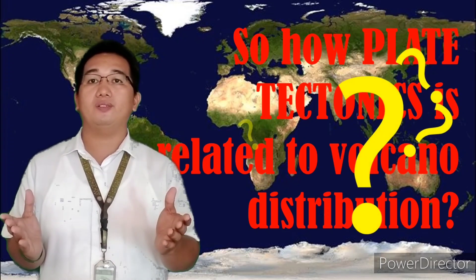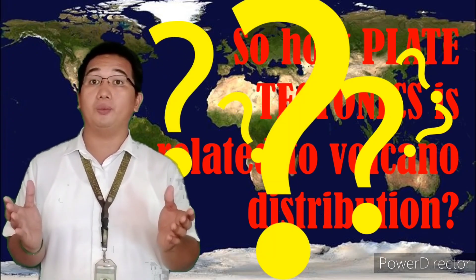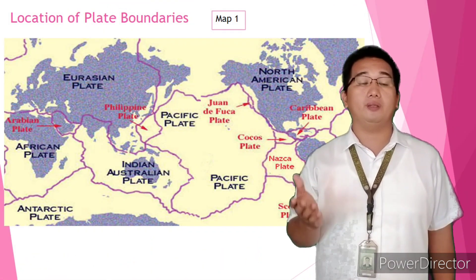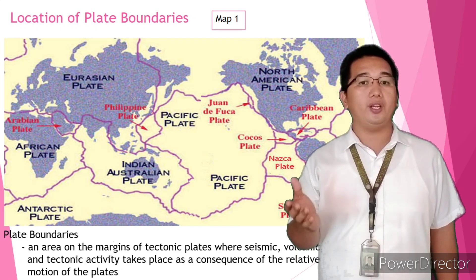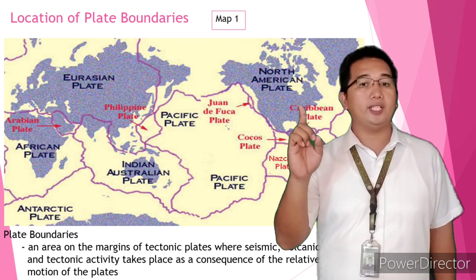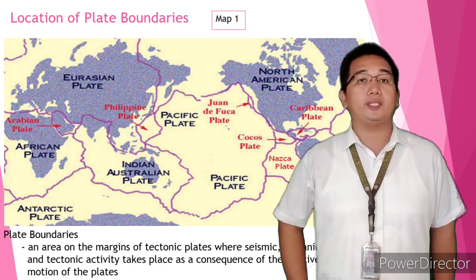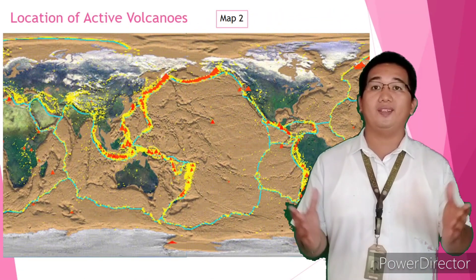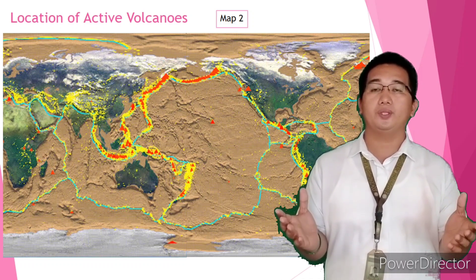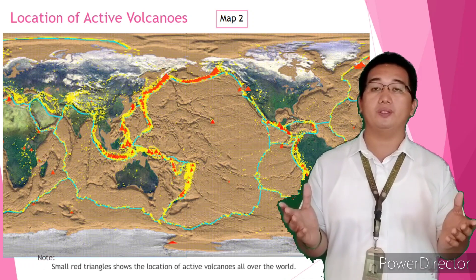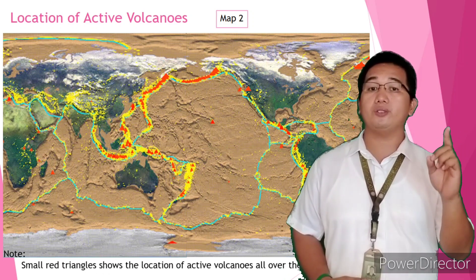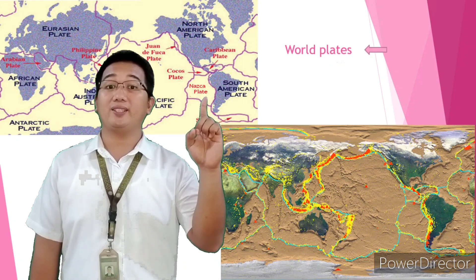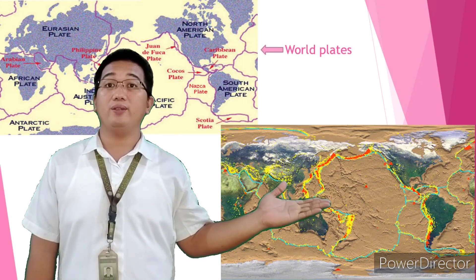Now let us relate the location of active volcanoes to the location of the plate boundaries. Let us go back to map number one that shows the location of the plate boundaries. Note that plate boundaries are areas on the margins of tectonic plates where seismic, volcanic, and tectonic activity takes place. Map number two shows the volcano distributions all over the world — small red triangles show the location of volcanoes.